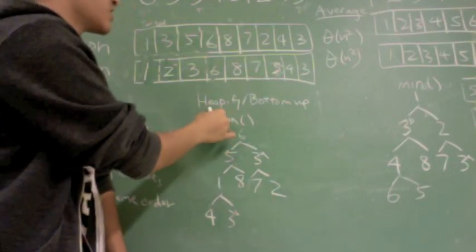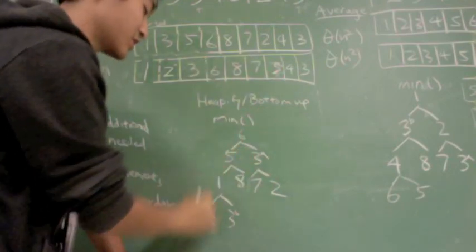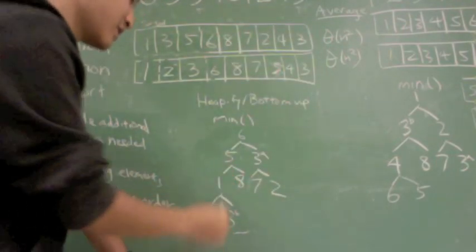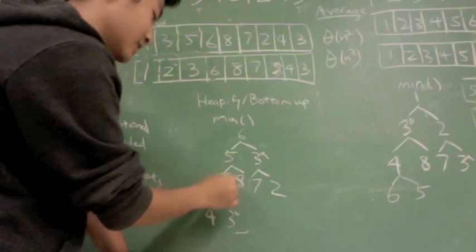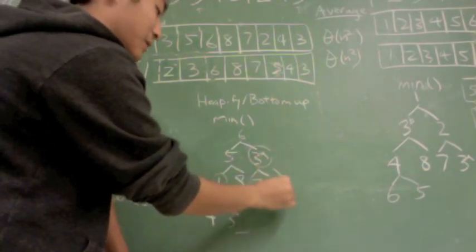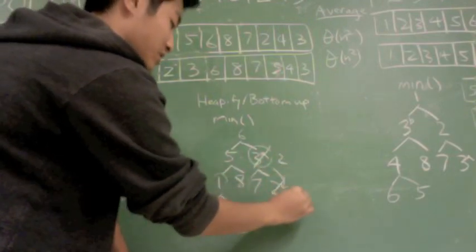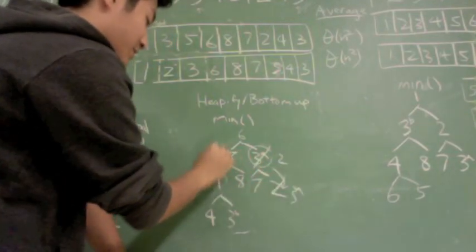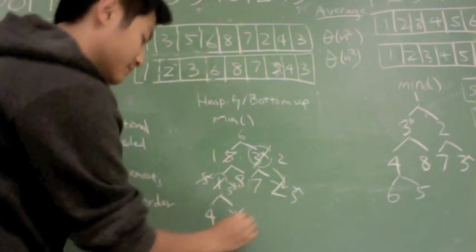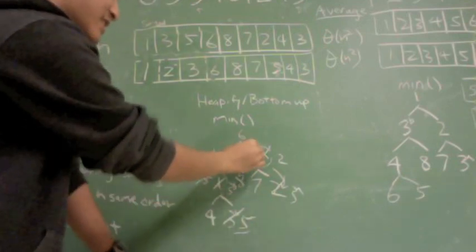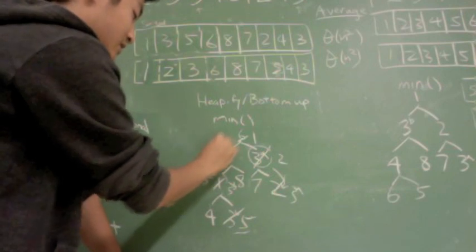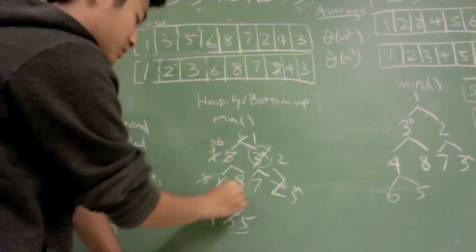First, what you need to do is you need to heapify or construct a heap out of the input array you're given. So here, the 1 doesn't need to be bubbled down, the 3a needs to be bubbled down. So the 2 and the 3a switch, the 5 and the 1 switch, and the 5 and the 3b also switch. Finally, the 6 switches with the 1, then it switches with the 3b, then it switches with the 4.